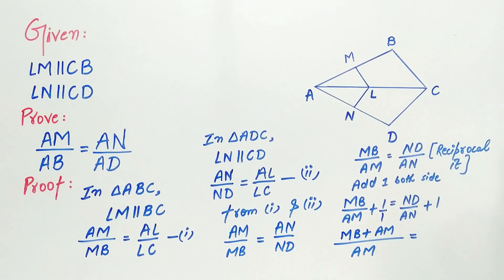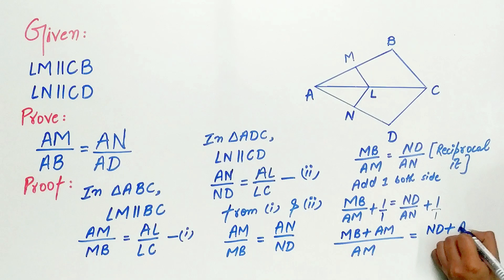Why? Because the LCM of one and AM is AM. Similarly, find the LCM of one and AN, which is equal to AN. So, ND plus AN by AN.